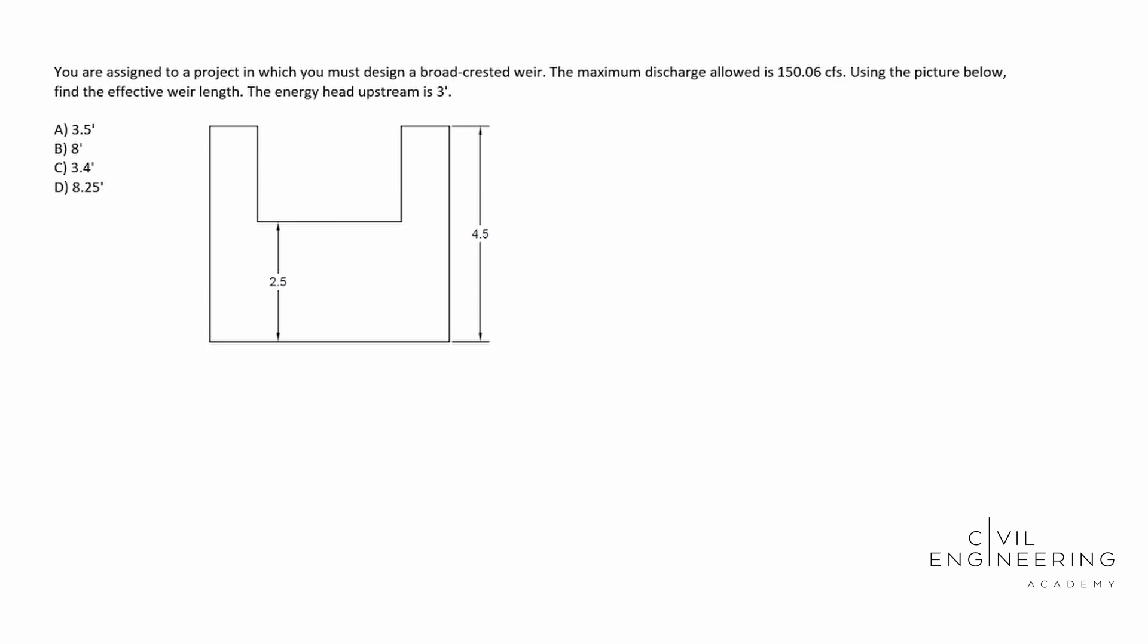Today we have a hydraulics hydrology problem, and in particular we're going to be talking about some flow through a weir. You are assigned to a project in which you must design a broad crested weir. The maximum discharge allowed is 150.06 cubic feet per second. Using the picture below, find the effective weir length. The energy head upstream is three feet.